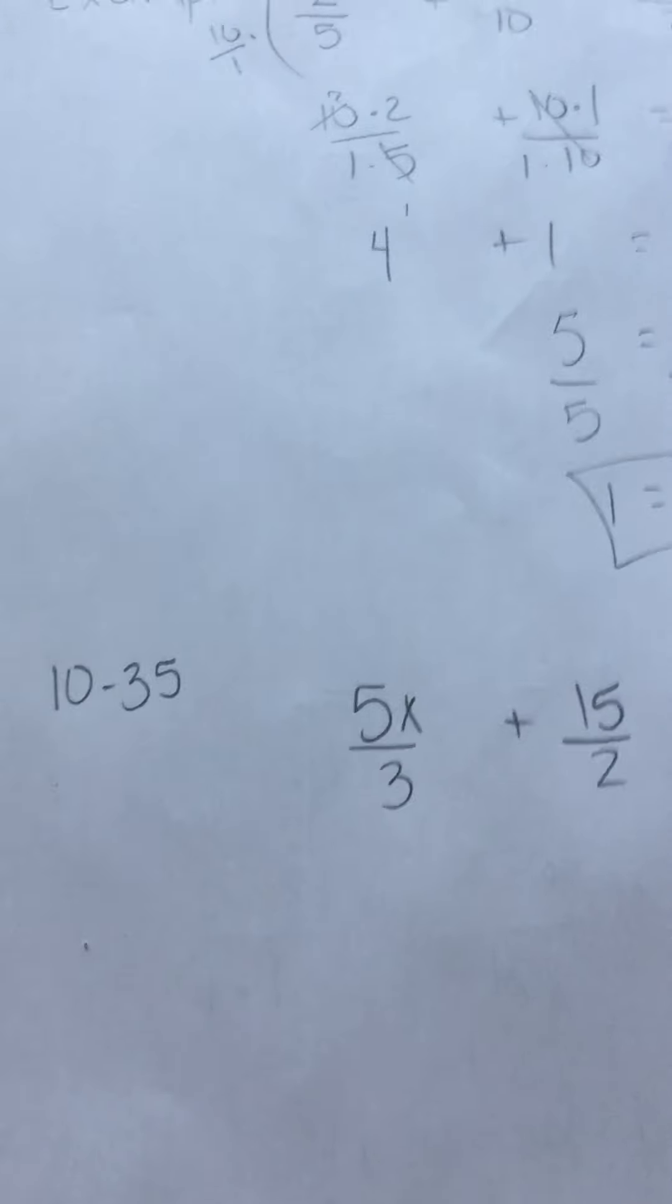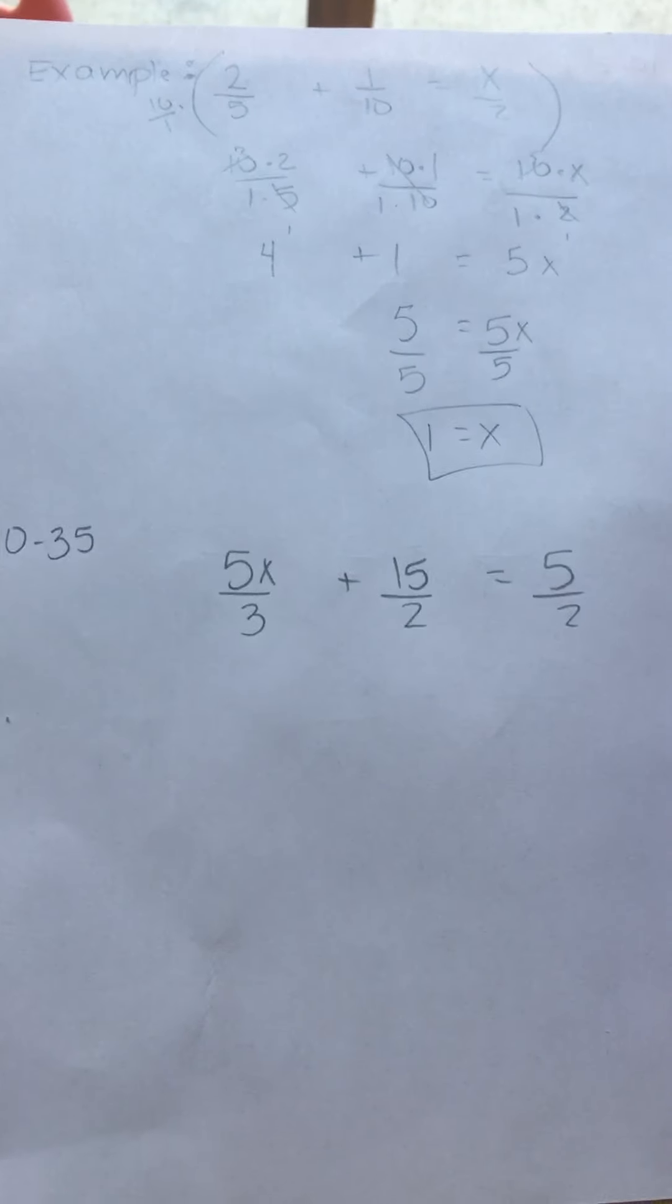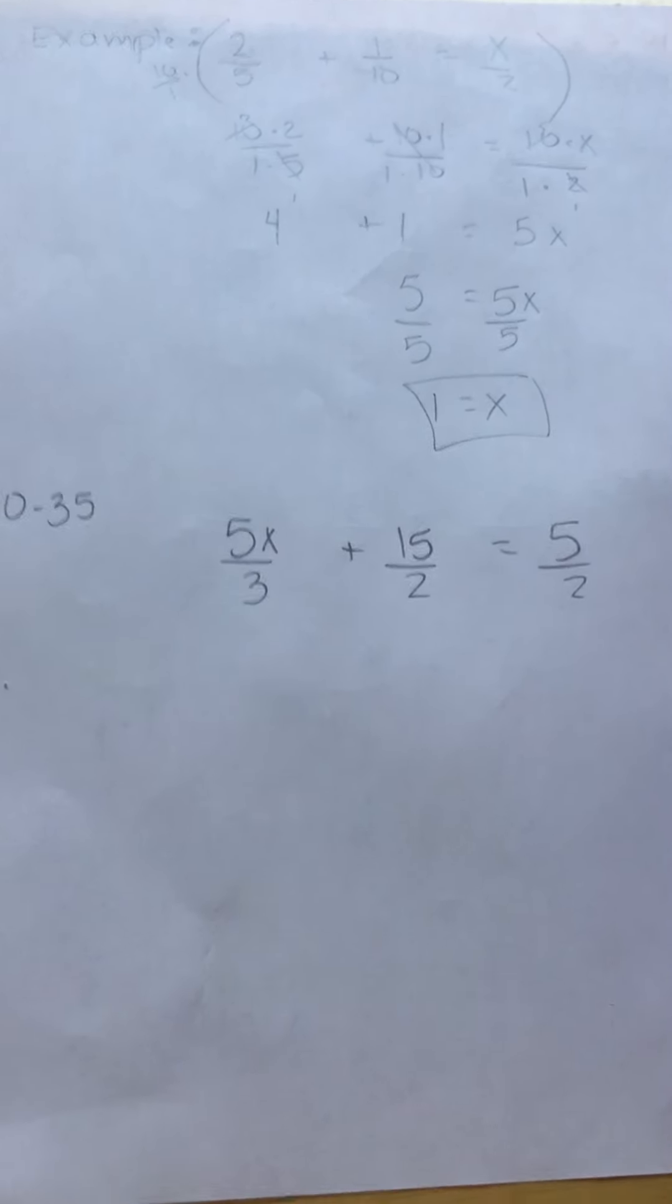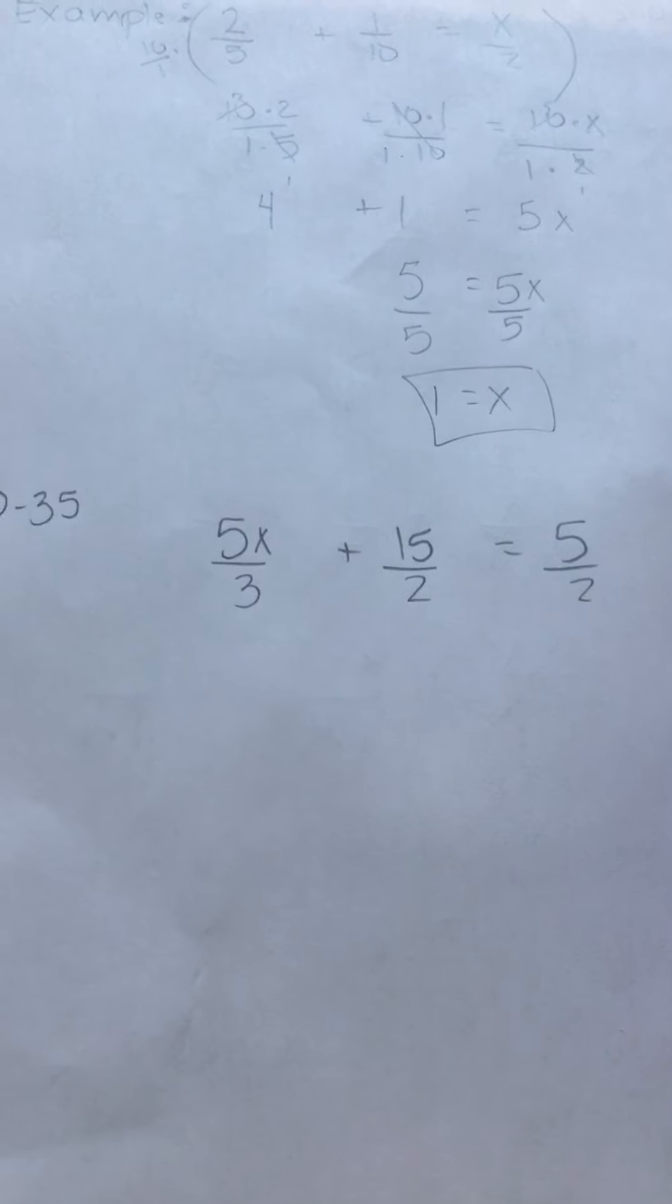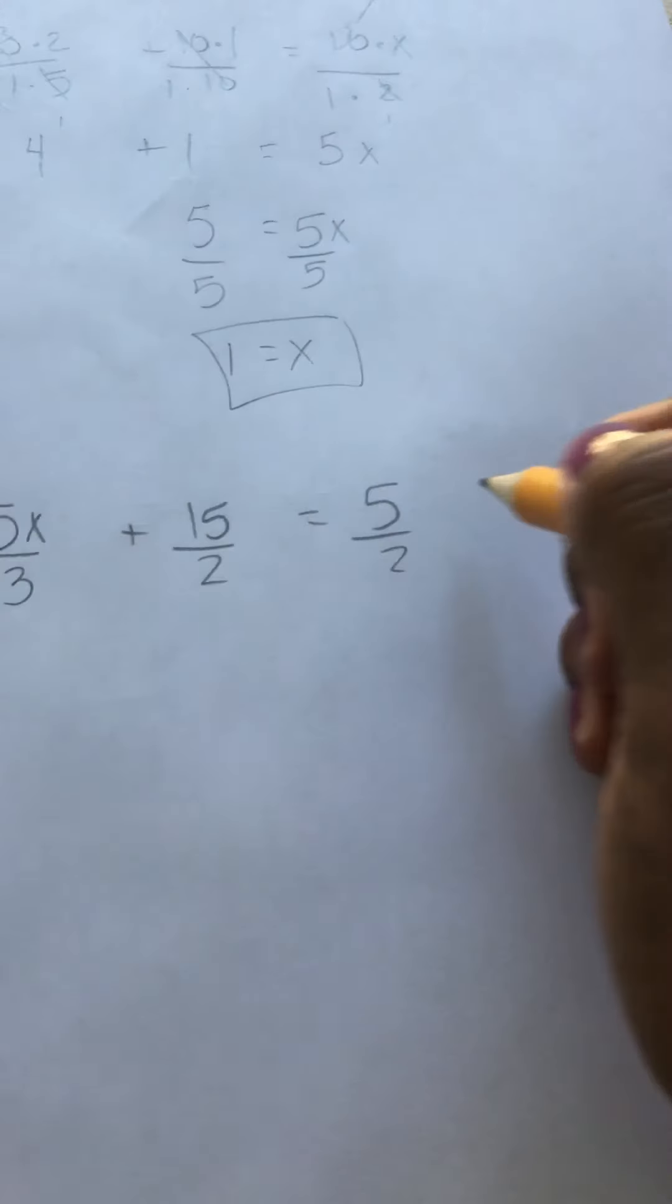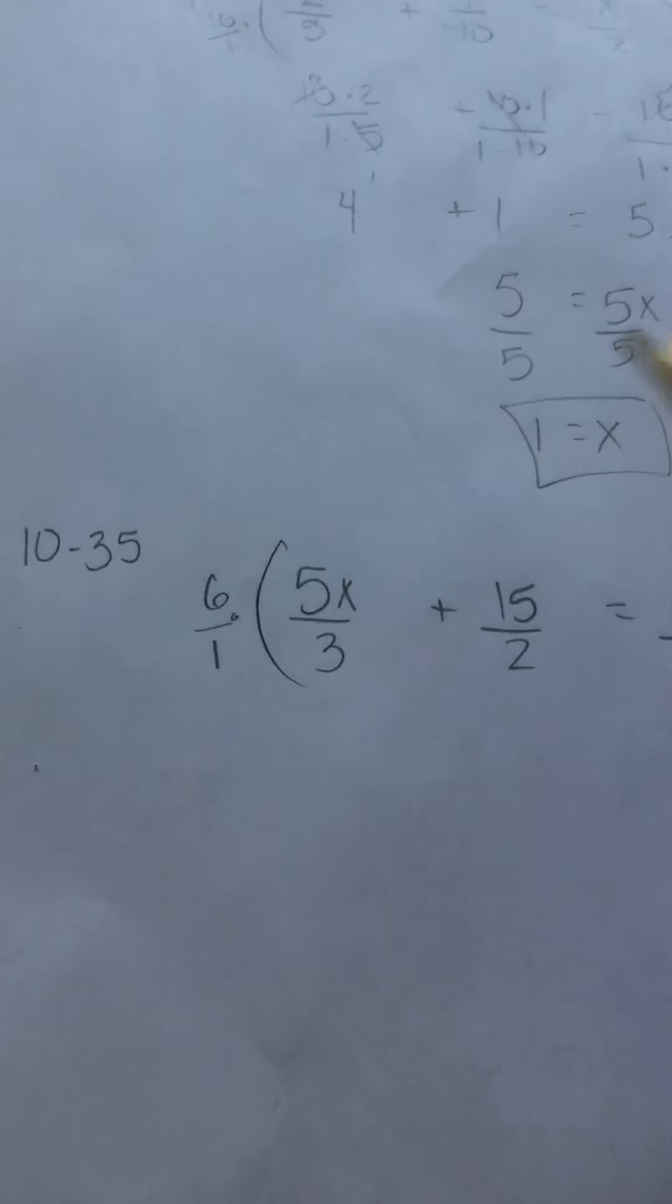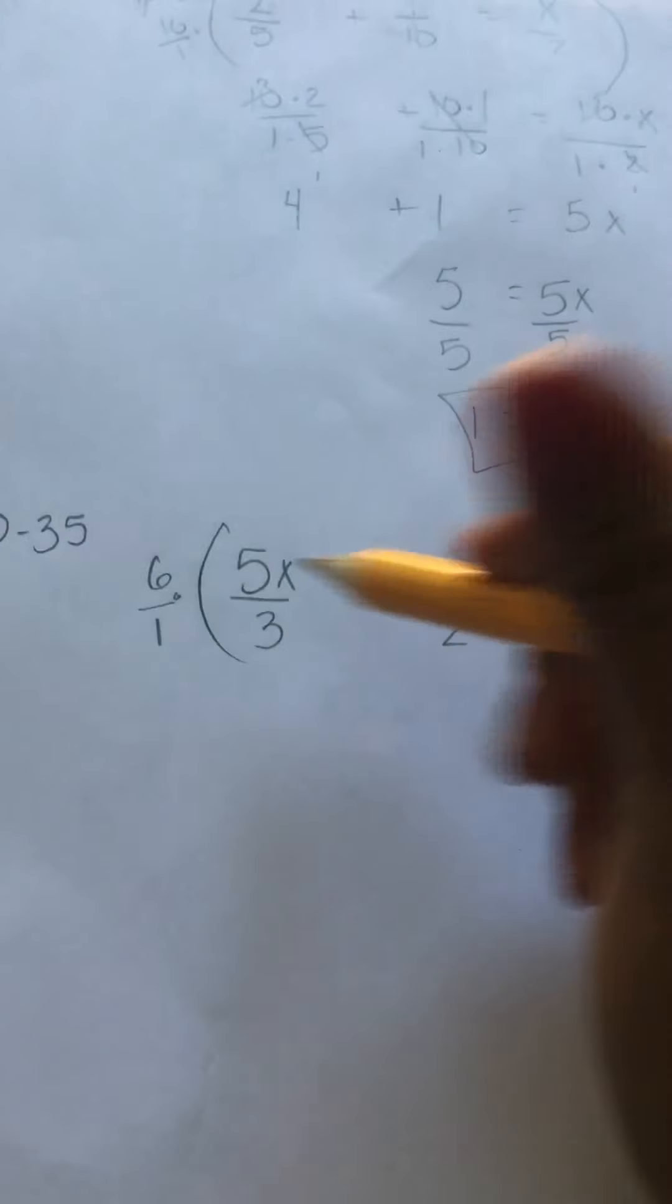Next example, which is from your book, 10.3.5. You have 5x over 3 plus 15 over 2 equals 5 over 2. I'm not multiplying by 3 or 2. I'm going to multiply by 6, 6 over 1. Alright, and the reason why is 3 can divide into 6 and 2 can divide into 6.